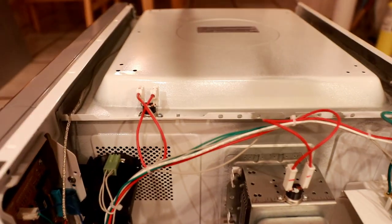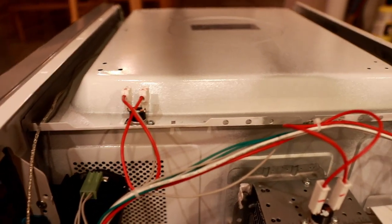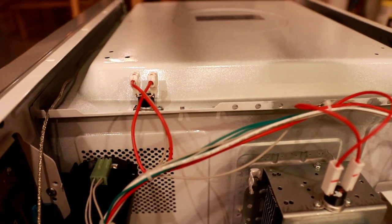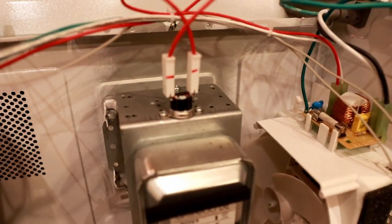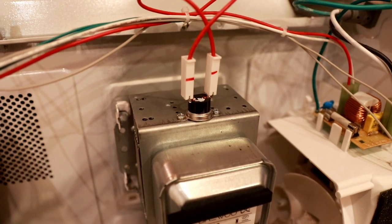There's also a couple thermal cutouts on the surrounding case of the microwave to make sure that the enclosure doesn't overheat and there's also a thermal cutout on the magnetron to make sure that if the magnetron overheats the power is interrupted.